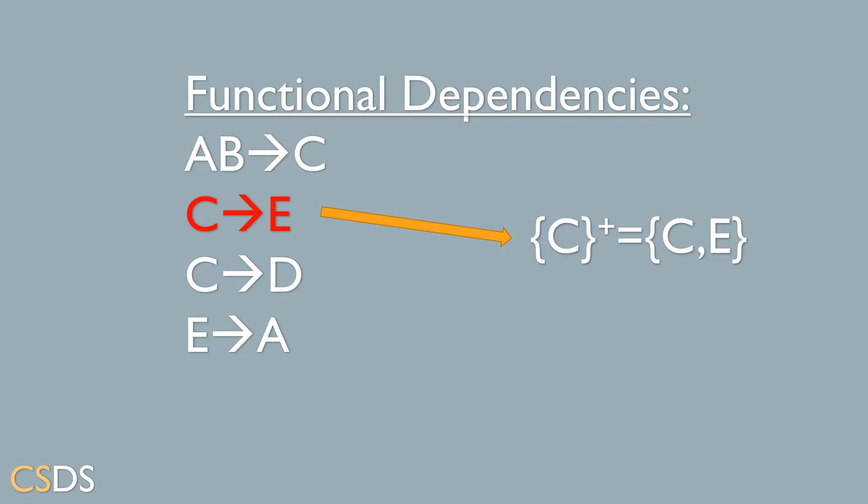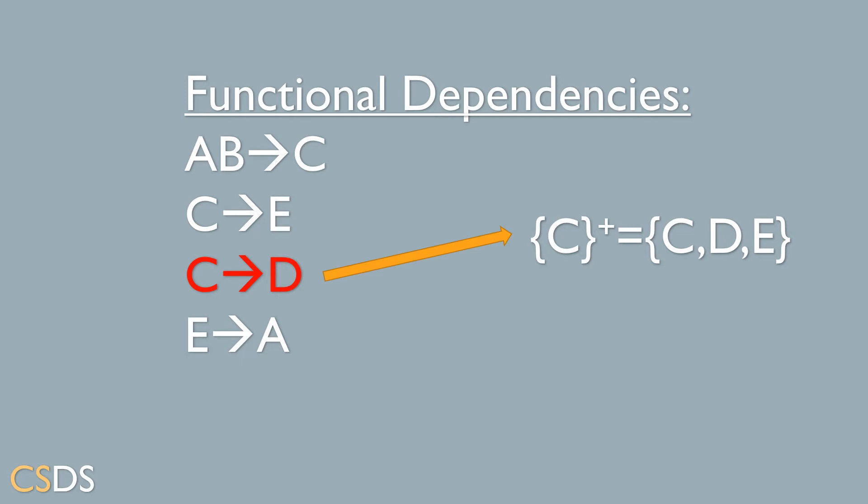Secondly, we go to the functional dependency C goes to E. We can see that we can determine E from the attribute C, so now our closure of C is C and E. Now we'll go to the functional dependency C goes to D. We can determine D from the attribute C, so we add the attribute D to the closure of C.